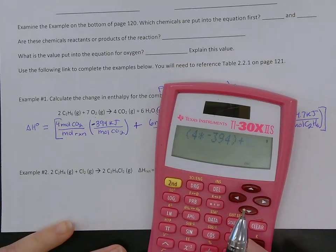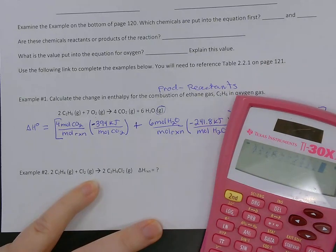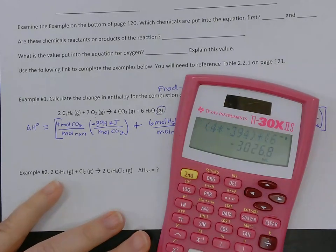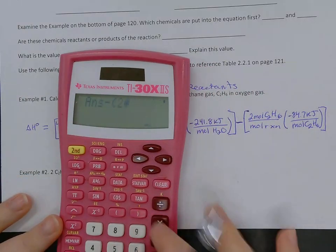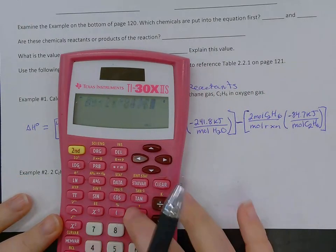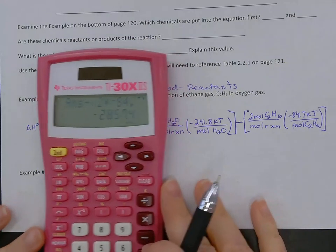I'm going to add to that six times negative 241.8. Go ahead and get my answer. And then I'm going to subtract the quantity two times negative 84.7.